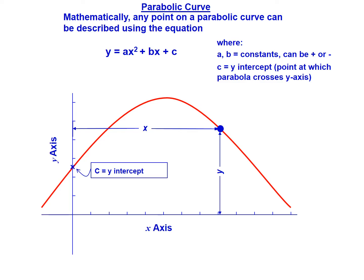Generally and mathematically, looking at the parabolic curve, you can use the equation Y equals AX squared plus BX plus C, where A and B are constants, and these can be positive or negative. We'll take a look at how these are specified for a vertical curve. C is the y-intercept, the point where the parabola crosses the y-axis.